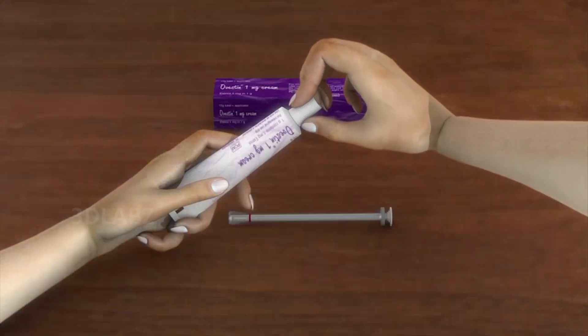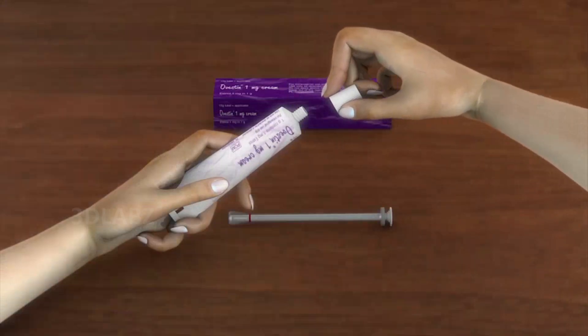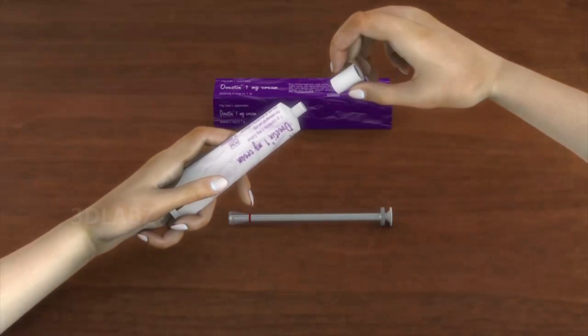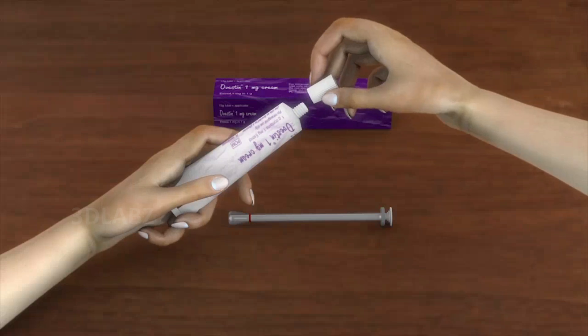Step 1. Remove the cap from the tube. Turn the cap upside down. You will notice a sharp point on the inverted side of the cap. Use this sharp point to open the top of the tube.